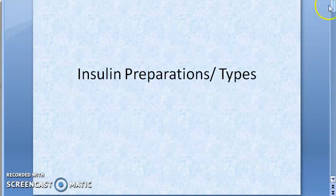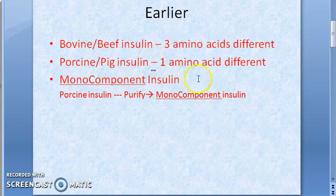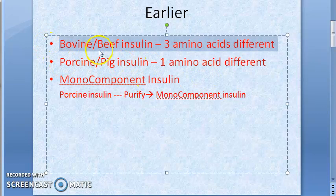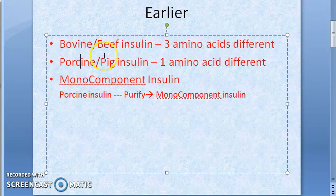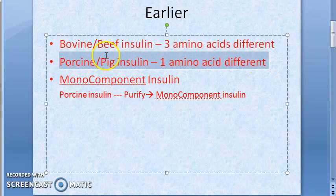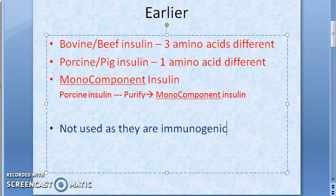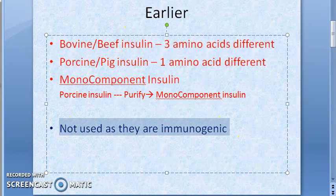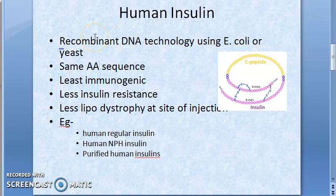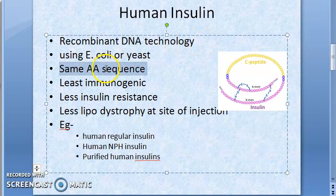Quick recap: Insulin preparation types — earlier there was beef insulin and pig insulin, slightly different from human insulin. Beef insulin differs in three amino acids (also called bovine insulin), and porcine insulin differs in only one amino acid. Both had significant immunogenicity so they are no longer used. Purified porcine insulin, also called monocomponent insulin, is similarly not used due to immune reactions. Human insulins are from recombinant DNA technology using E. coli and yeast, with the same amino acid sequence as human insulin — least immunogenic, causing least insulin resistance and less lipodystrophy at the injection site.